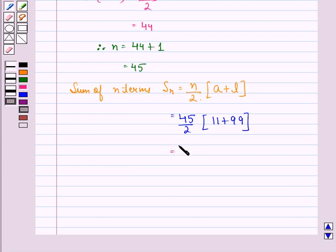That is equal to 45 divided by 2 into 110, that is equal to 45 into 55, that is equal to 2475.